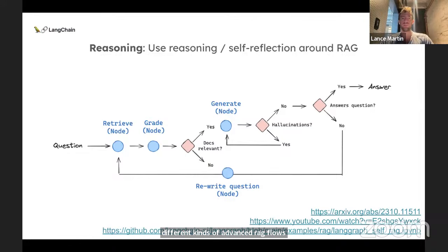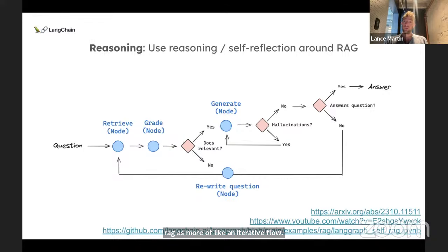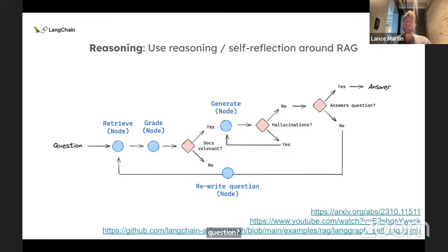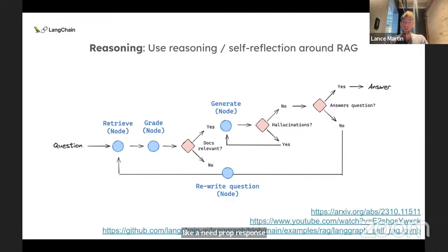Beyond retrieval, I've been doing work on different kinds of advanced RAG flows. One paper is Self-RAG — instead of thinking about RAG as a naive prompt-response paradigm, think about RAG as an iterative flow with inline grading to do checks. We do retrieval, then check: are those documents relevant to my question? If not, we can fall back to web search, rewrite the question and try again. We can also ask: does the generation have hallucinations? Is it grounded in the documents? If not, we try again. Moving from naive prompt-response RAG to corrective or iterative RAG flows is another trend.